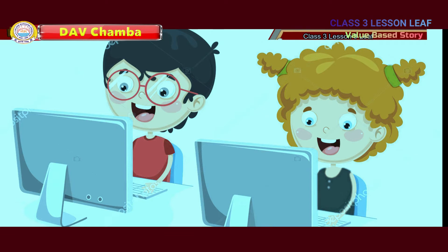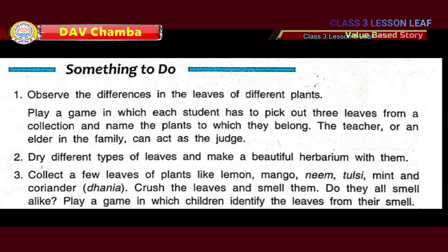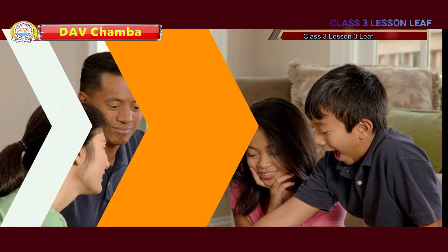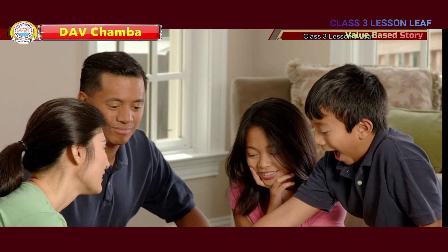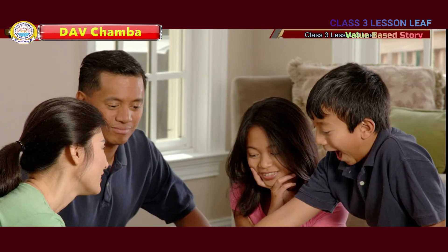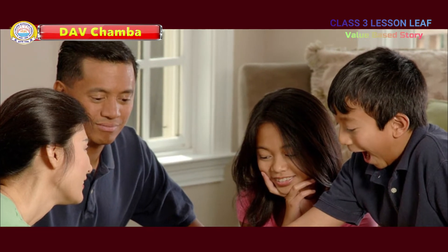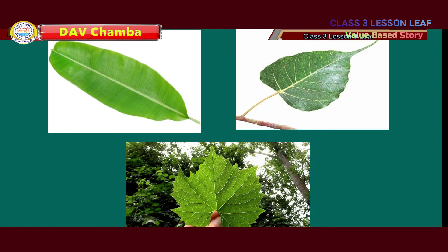Next is something to do. Let's do an activity. Before starting this activity, call your family members as a judge. Here are three leaves I am showing you in the picture. Watch these leaves carefully. Now name the plants to which they belong.